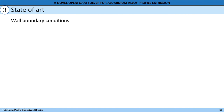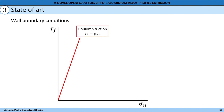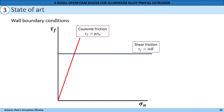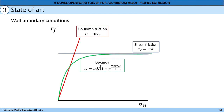During the extrusion process, tribological conditions of the tools and flow material interface are important for the shape of the extruded material, and a reliable and accurate model is mandatory. There are some models in the literature that correlate friction stress and normal contact pressure. One of them is the Coulomb friction model, where with the increase in normal contact pressure, the friction stress increases. The shear friction is another model, which shows constant behavior in friction stress for different values of normal contact pressure, and also the Levanov model, which is a generalization of the Coulomb model and shear friction model. The model used in this work is the shear friction, because it presents good results in describing the contact between the flow material and the tools.